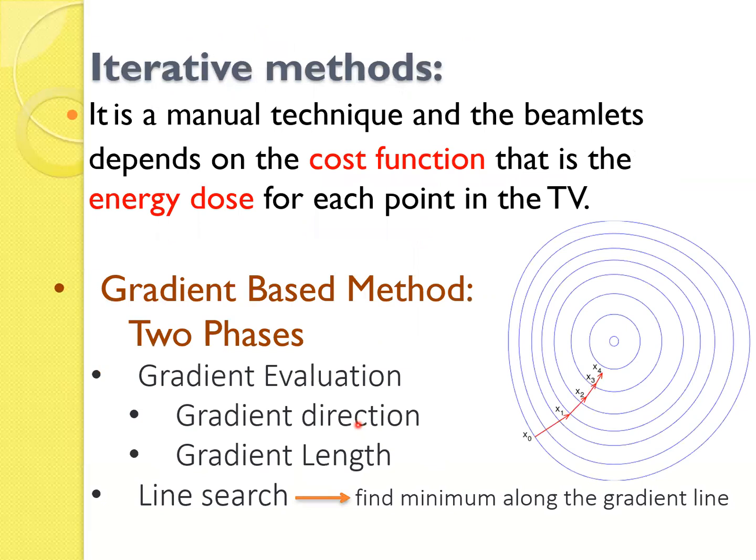So if you take the example of gradient-based method, there are two phases. One is gradient direction, the other is gradient length. So the idea is that it will achieve a global minima, but it could be trapped in local minima.